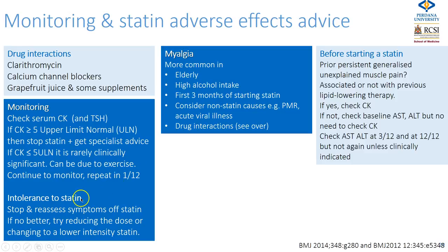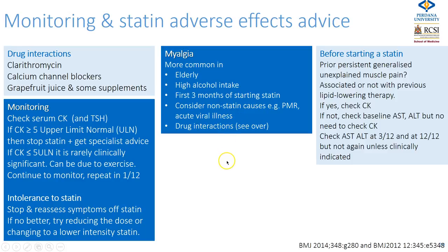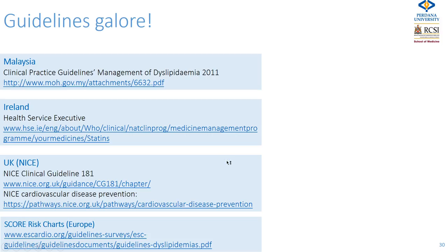If the patient is intolerant to a statin, stop and reassess off the statin. If symptoms don't improve, try reducing the dose or changing to a lower-intensity statin. Myalgia is more common in the elderly, those with high alcohol consumption, within the first three months of starting, and in certain other groups. Consider other causes — in an elderly patient could it be polymyalgia rheumatica, and in a younger patient could it be acute viral illness? Check also for drug interactions.